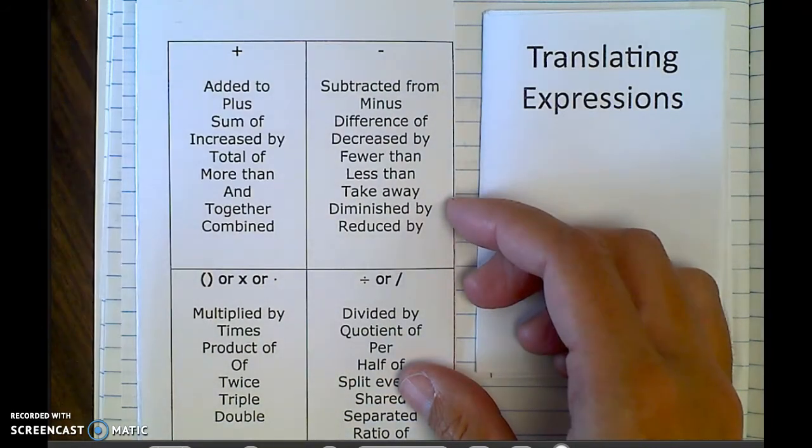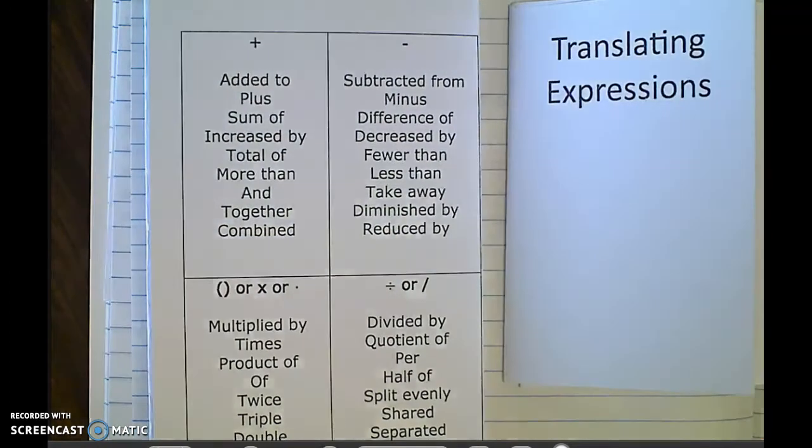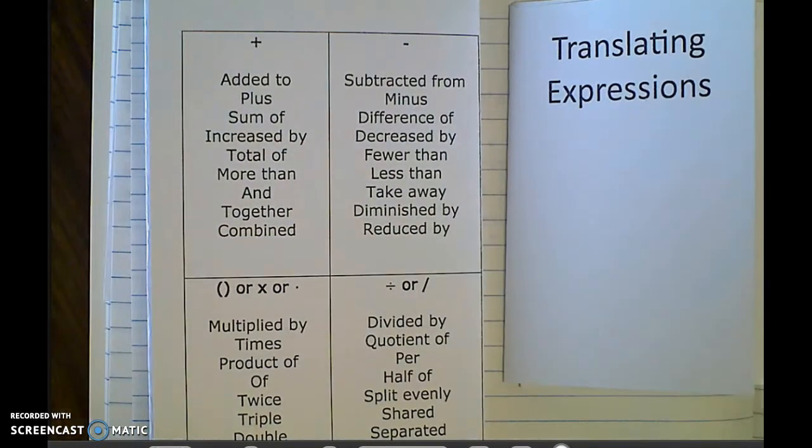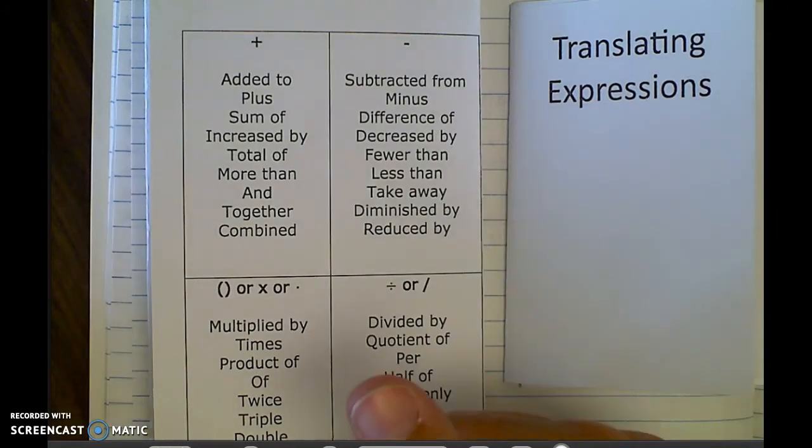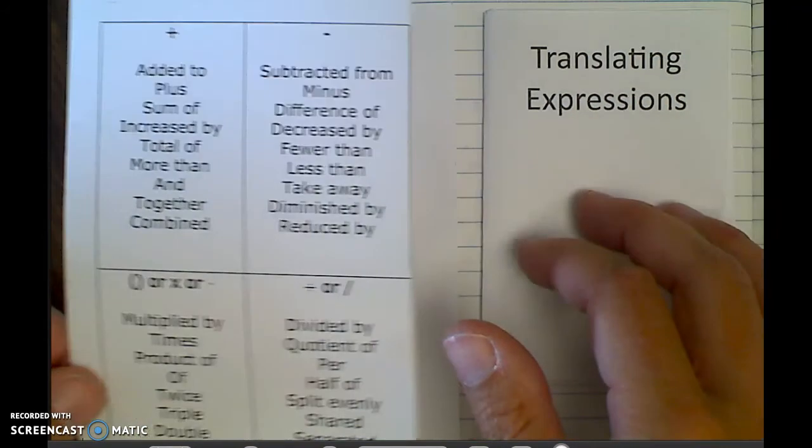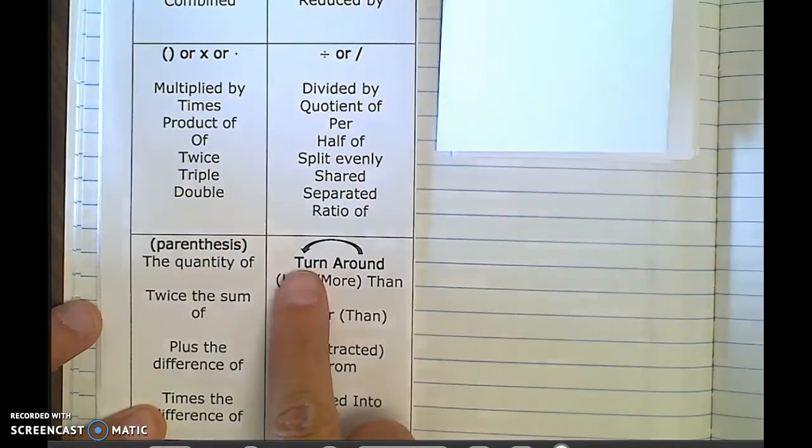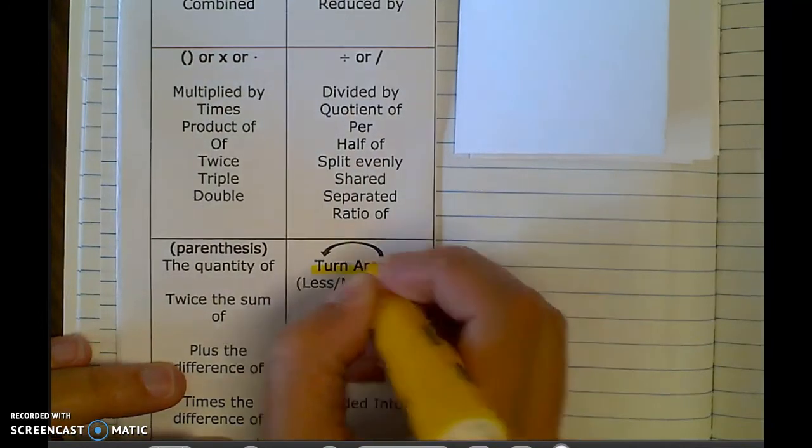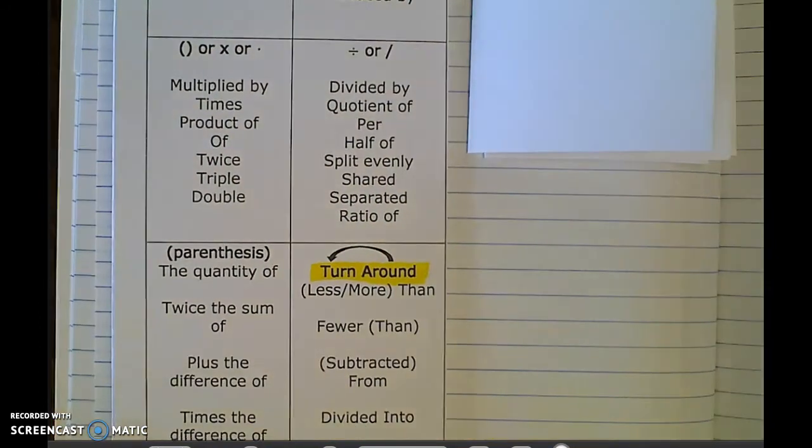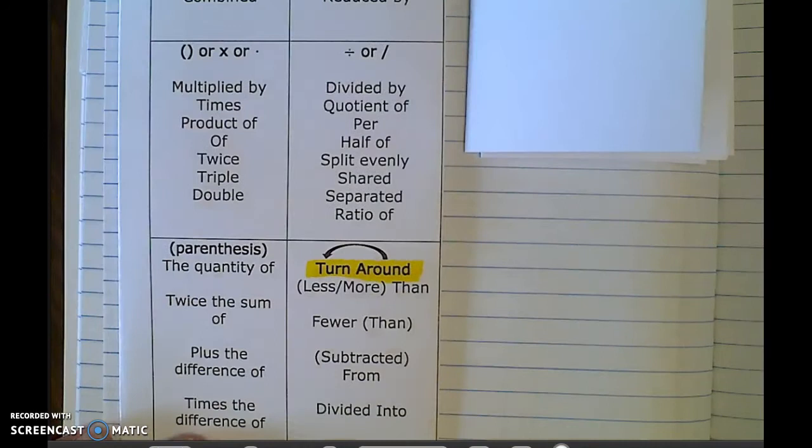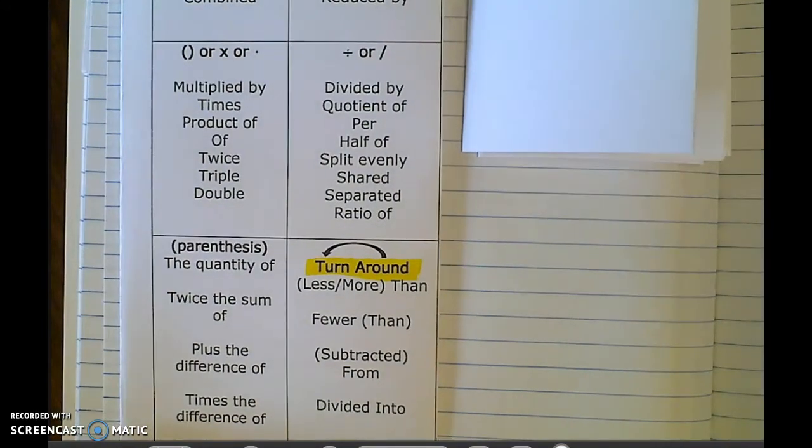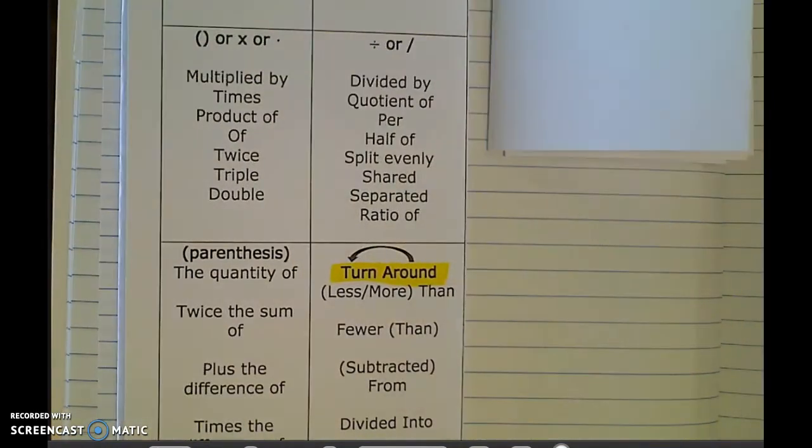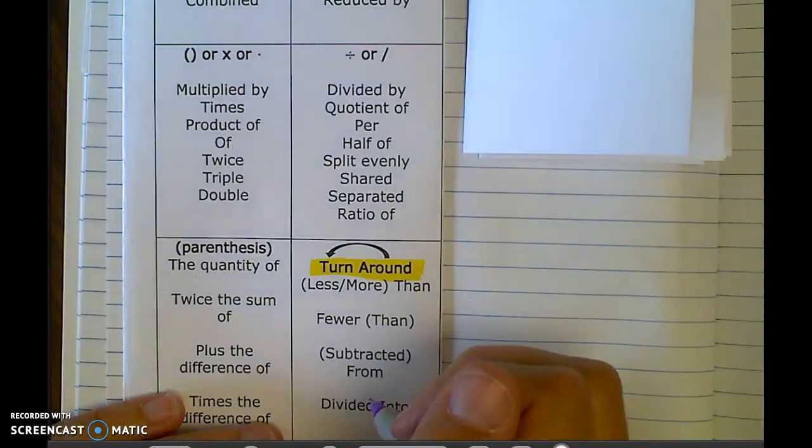When I'm reading a sentence and I'm translating math from a sentence into a math problem, it's good to recognize these words. The ones that I definitely want to point out to you are turn around words because I want to make sure you understand what I mean by that. What I mean by turn around words is if I see something like 5 is less than 4 or 5 is less than x.